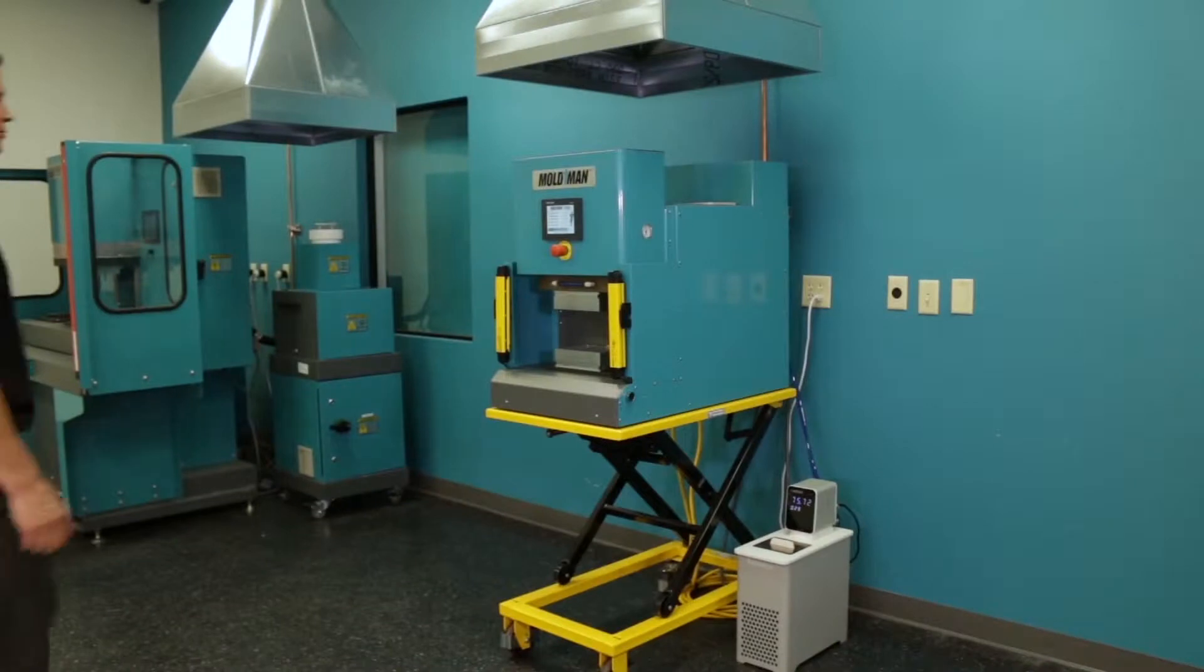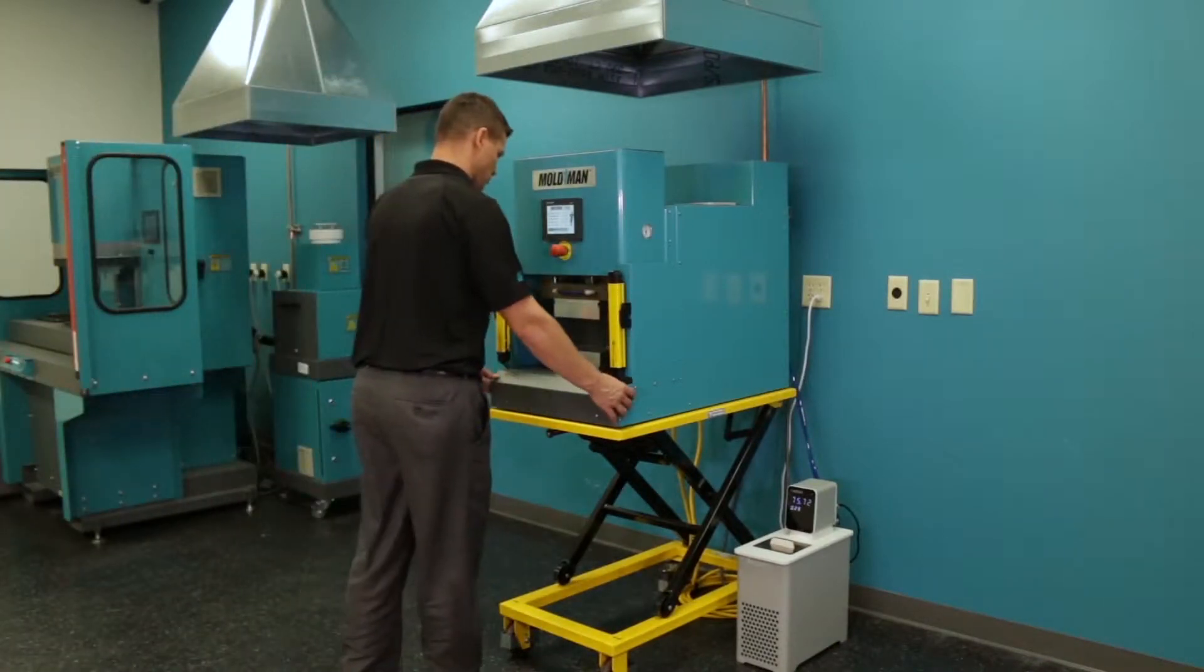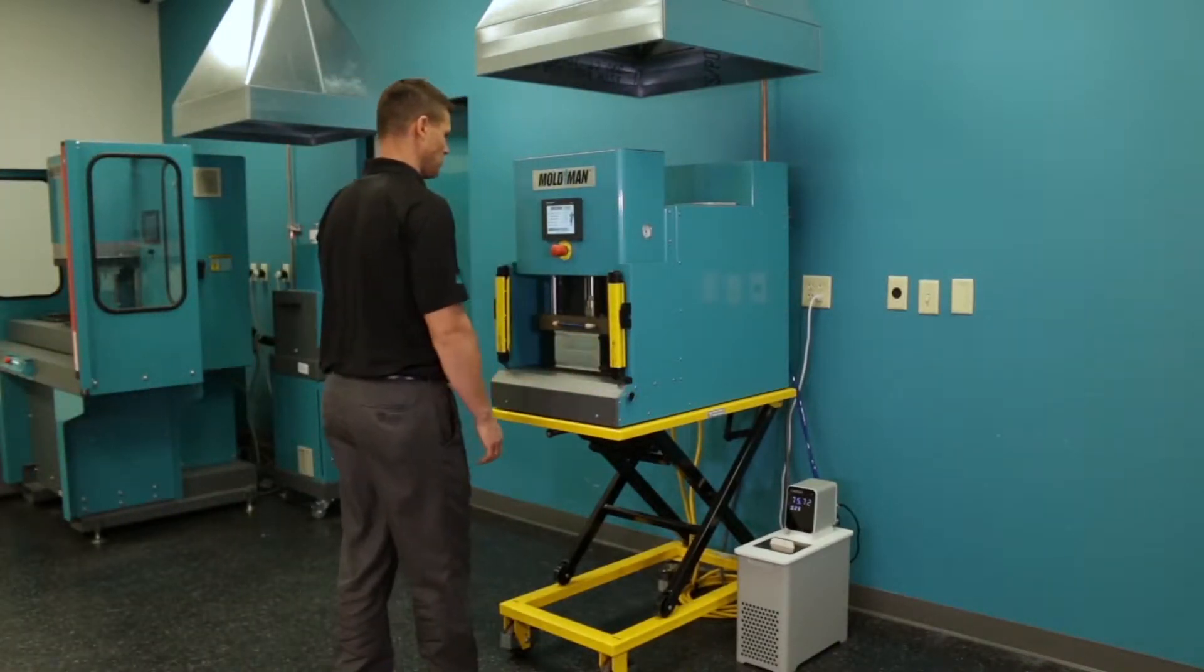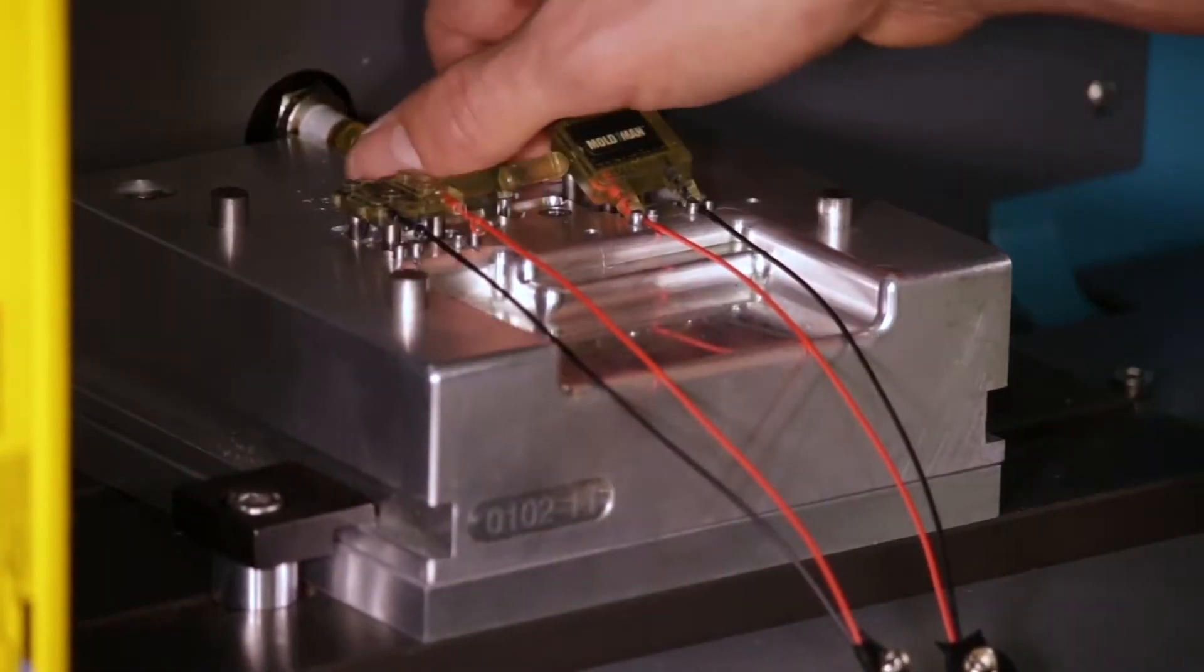The Moldman 1050 is a small and versatile low pressure molding machine capable of sealing sensitive electronics ready to handle and test in seconds.